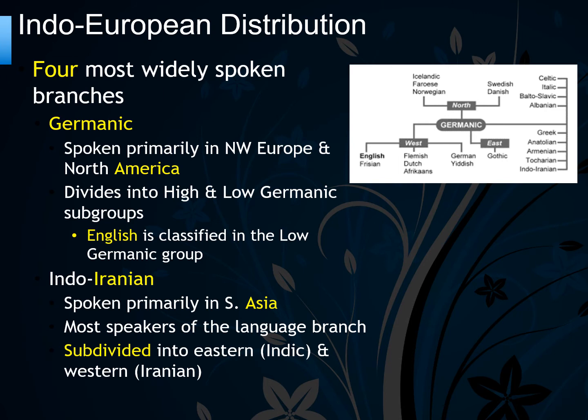The Germanic branch is divided into subgroups known as high and low Germanic. English is classified in the low Germanic group, along with German, meaning we have the most in common with German.